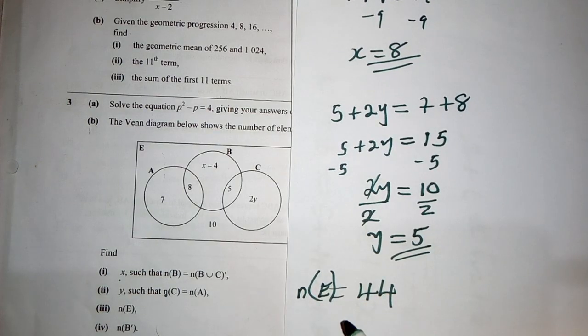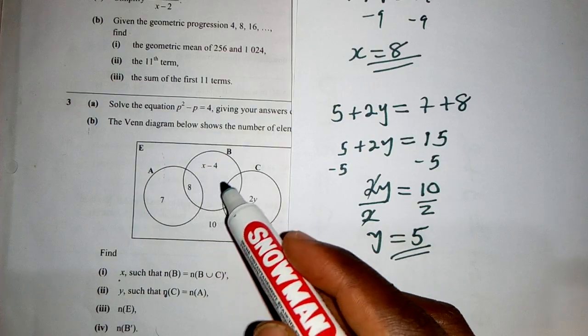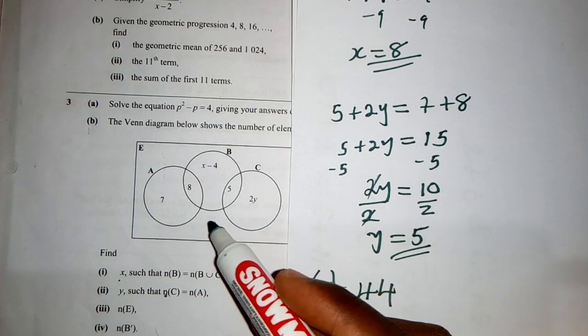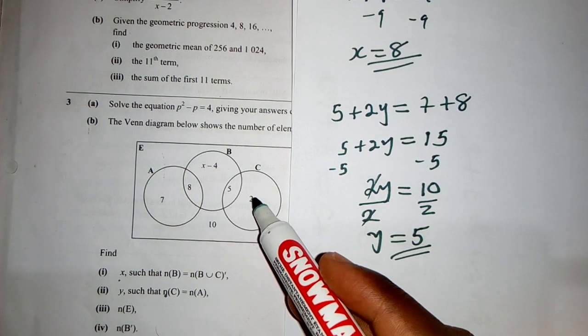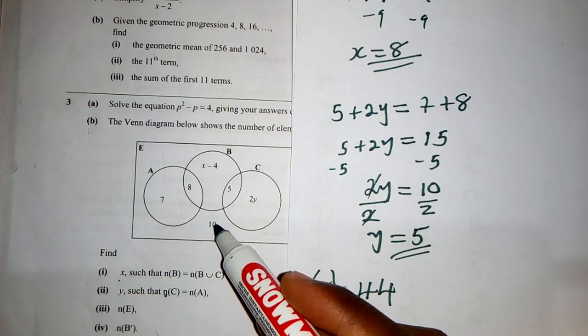And then the number of elements in B complement, we remove everything in B, and then we check what we remain with. This is 20 here, I mean 10 here, and then 10 plus 10, 20 plus 7, it's 27.